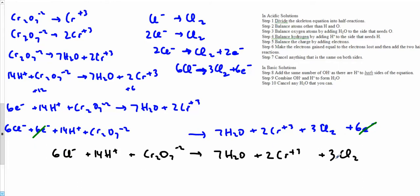6 Cls, 6 Cls. 2 of those, 2 of those. 14 Hs, 14 Hs. O's, so I've got 7, I've got 7. It looks like I'm balanced for all those. Total charge on this side minus 6, this side is plus 6. Total charge on this side is plus 6. This thing is balanced.